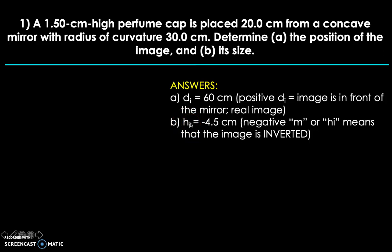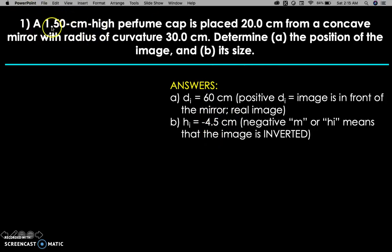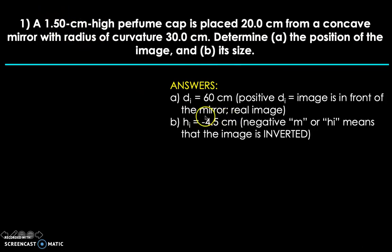And because it is 4.5 centimeters, it means that it is magnified because the actual object is only 1.50 centimeters, but the image is 4.5 centimeters. So the magnification is actually 3, or negative 3 to be more particular with the sign because the image height is triple the size of the object. So the negative sign means it is inverted.